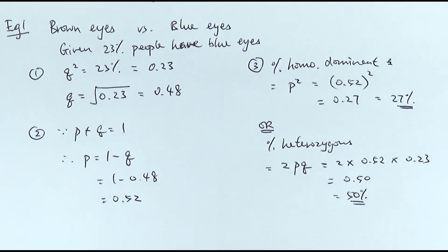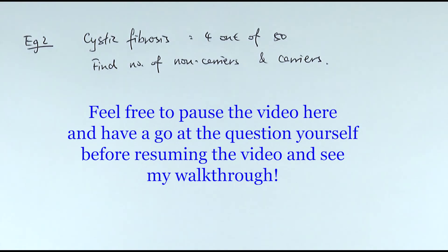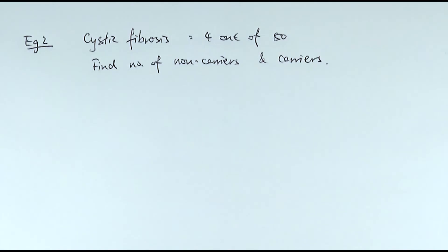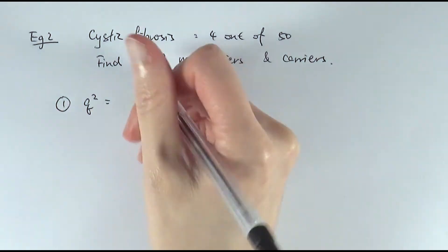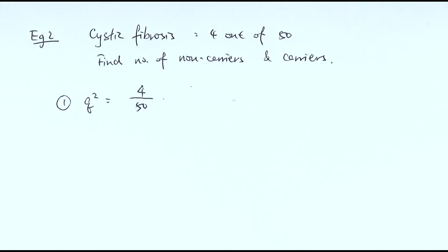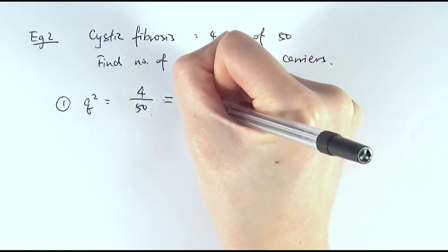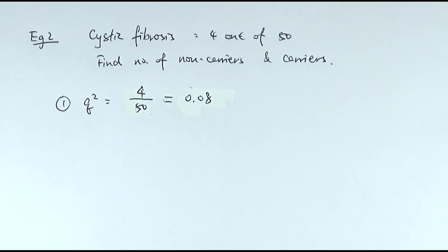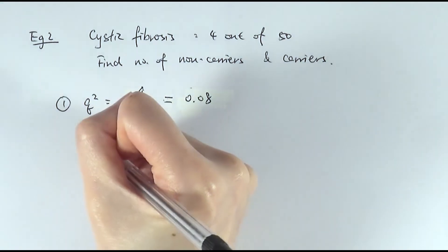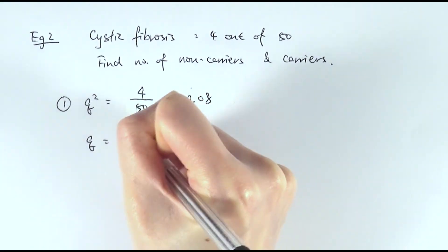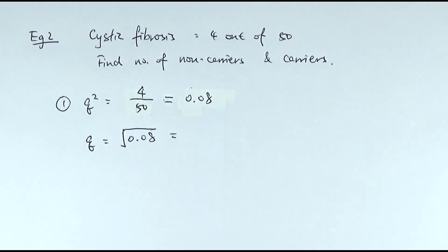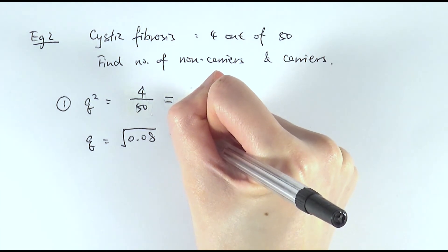Now let's look at another example. In a group of 50 people, 4 of them have cystic fibrosis. Find the number of people who are non-carriers and the number who are carriers. Cystic fibrosis is a recessive condition, meaning a person gets it if they have both recessive alleles. So first, find Q squared: people with cystic fibrosis is 4 out of 50, so 4 divided by 50 equals 0.08, meaning about 8% have cystic fibrosis. Then Q equals the square root of 0.08, which is 0.28.